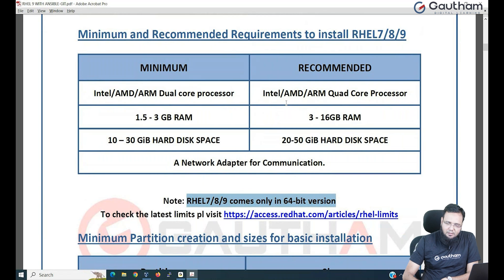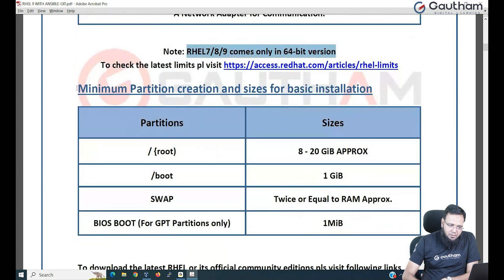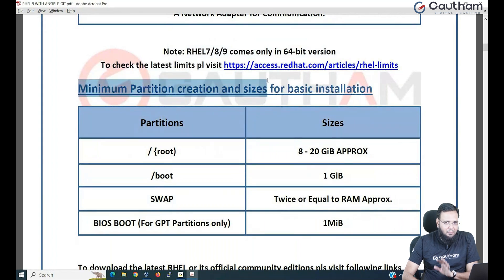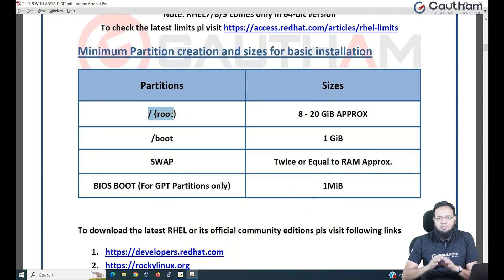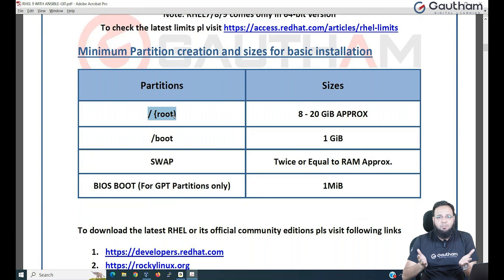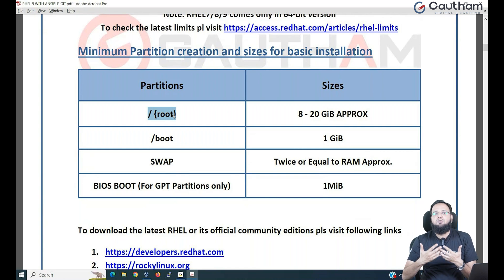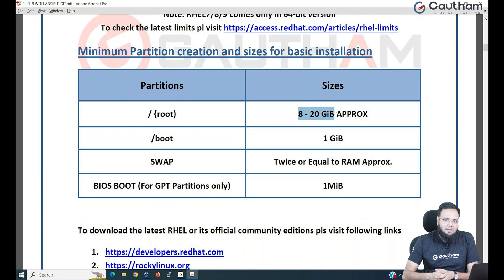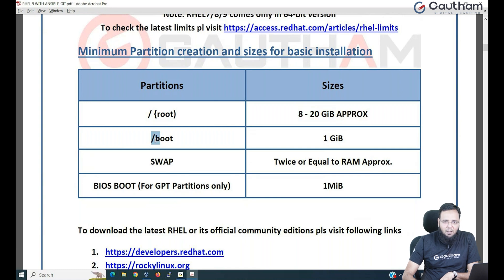All requirements remain the same. During installation, we require a minimum of 3 partitions without which the installation cannot be completed. First is root — the most important partition without which the OS cannot be installed. Root is the main partition that contains the whole operating system inside it, and it needs to be given maximum available space, like 8 to 20 GB. If your hard disk is 30 GB, give 20 GB to root. The next partition required is boot, which is needed to boot your operating system.